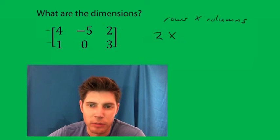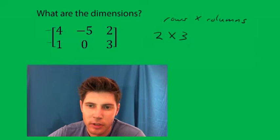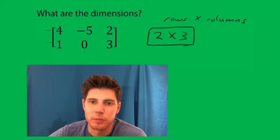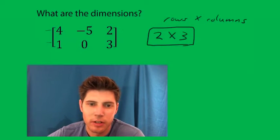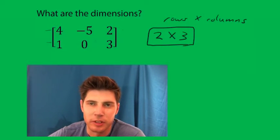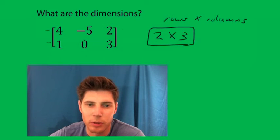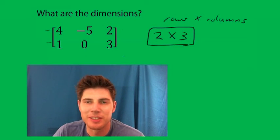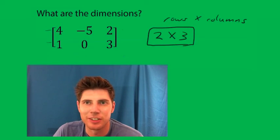There are three columns. And that is the dimensions of this matrix. Columns are like the columns of buildings — they always go up and down, and the rows go that way. So hope that made sense and I'll talk to you guys soon.